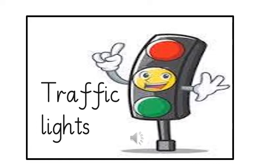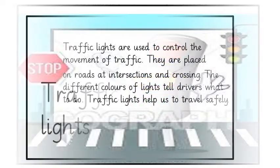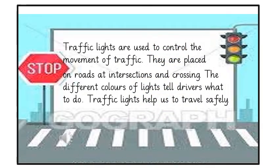Today we are going to learn about traffic lights. Traffic lights are used to control the movement of traffic. They are placed on roads, at intersections and crossings. The different colors of lights tell drivers what to do. Traffic lights help us to travel safely.